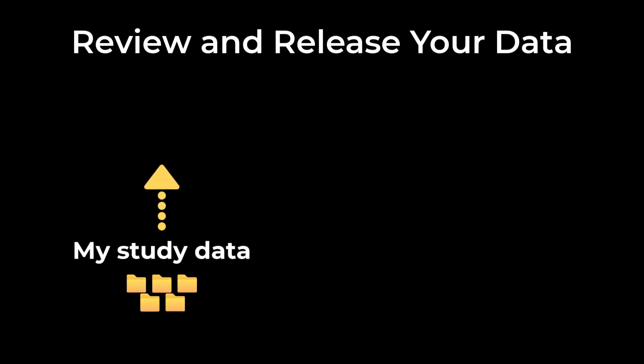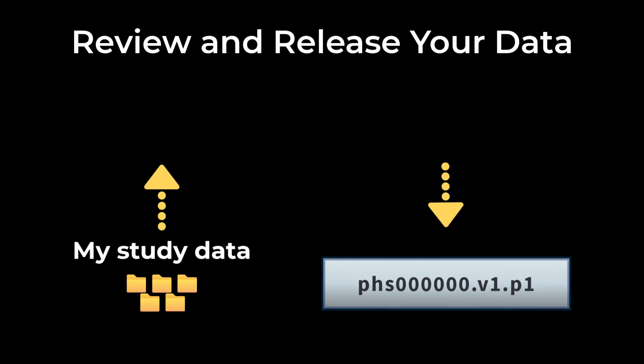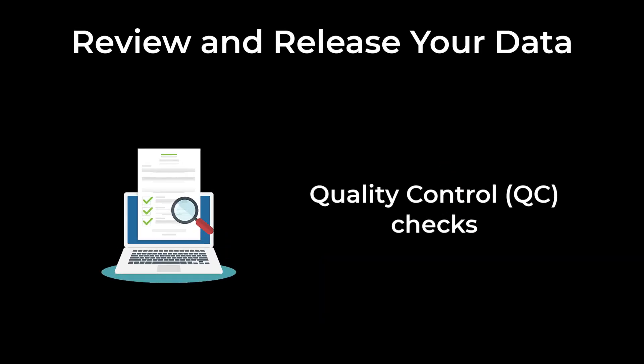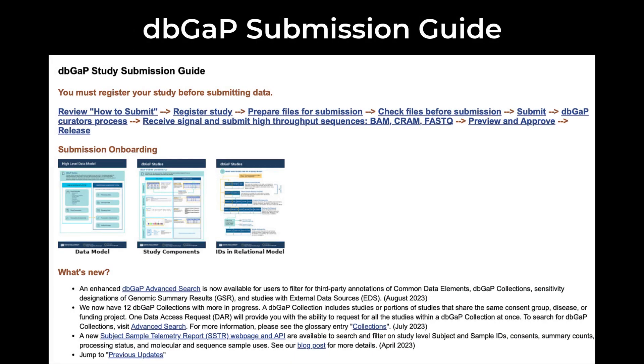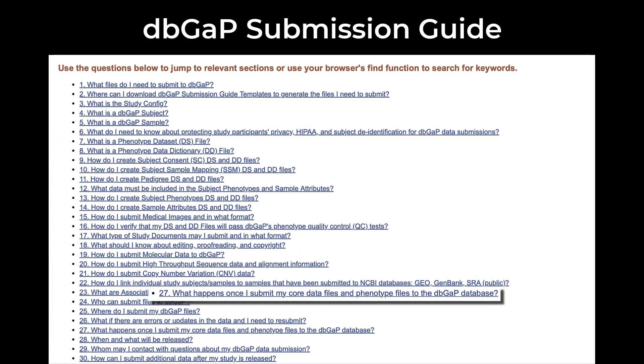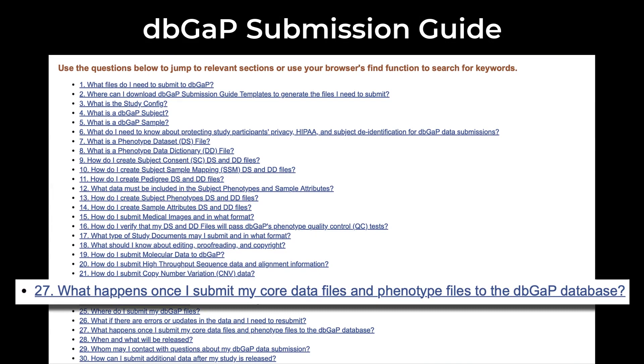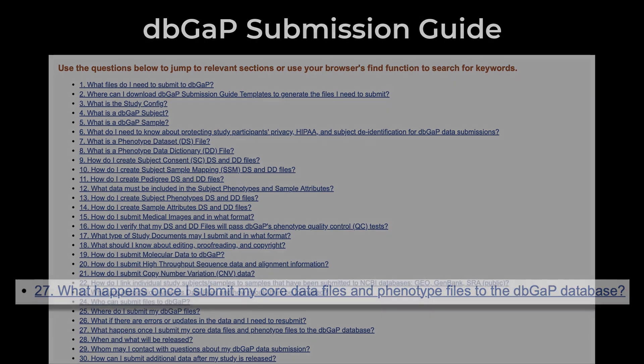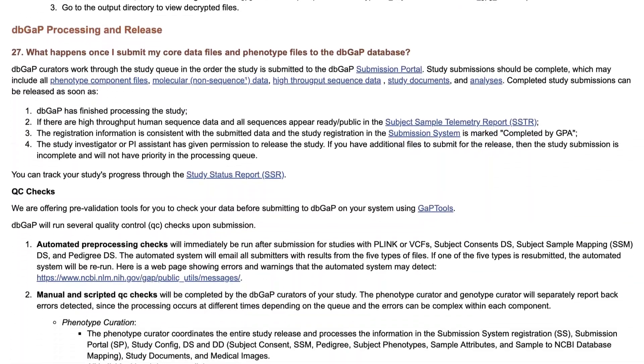The review process for your study begins after all of your datasets are submitted and you have received your study accession number. This video first describes the quality control, or QC checks, that the dbGaP curators perform during review, then briefly describes the release process. These QC checks are critical to ensuring that dbGaP data are internally consistent. The dbGaP submission guide has a list of 30 common questions, and number 27 is called: What happens once I submit my core data files and phenotype files? We'll review the major points in number 27.